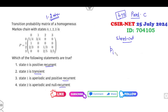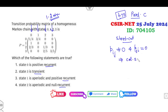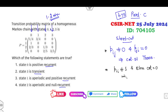First shortcut: always look column-wise. If p_ij is non-zero but p_ji is zero, then that column's state is transient. Second shortcut: if p_ii is non-one and all other elements of that column are zero, then that column state is also called a transient state.